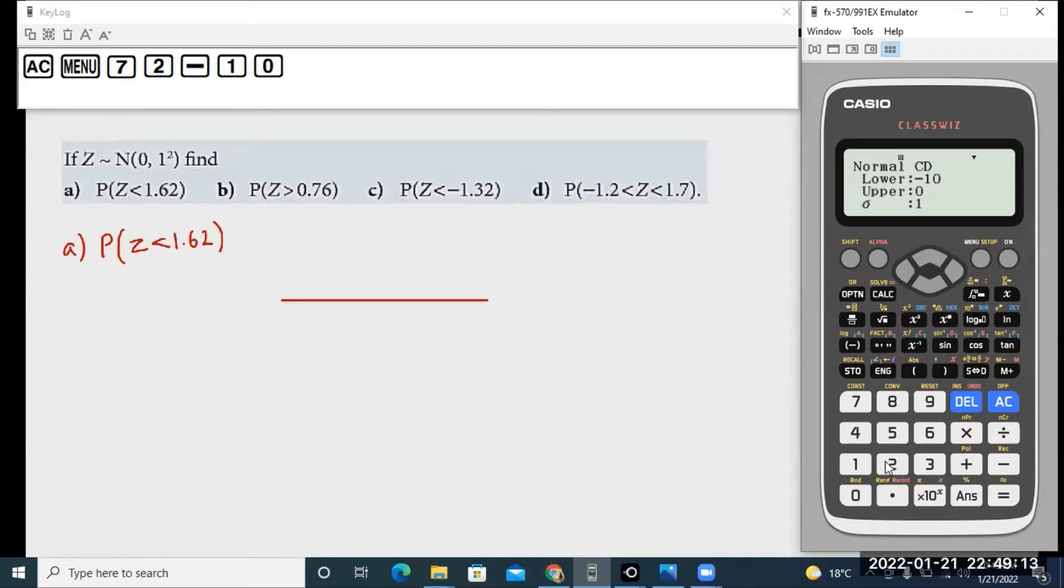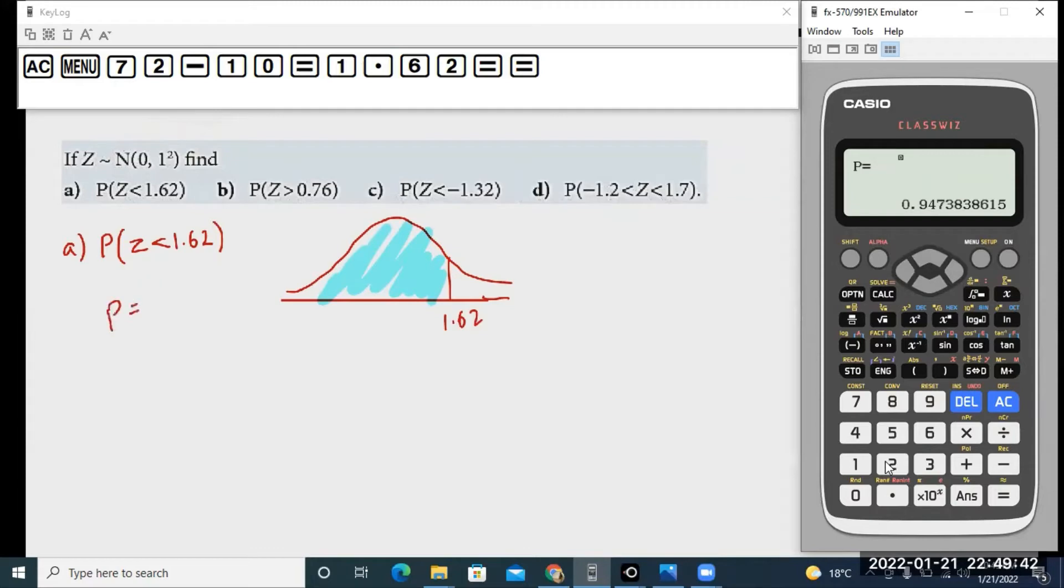As highlighted before, when calculating the probability of z below a certain value, the lower has to be minus 10, then upper is the value you want to insert. As visible on the screen, sigma is 1 and mu is 0. Then I press equals to calculate and get the probability 0.9474.